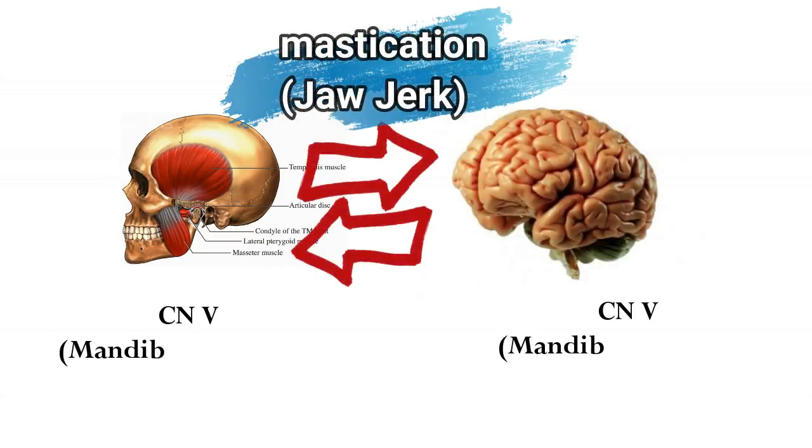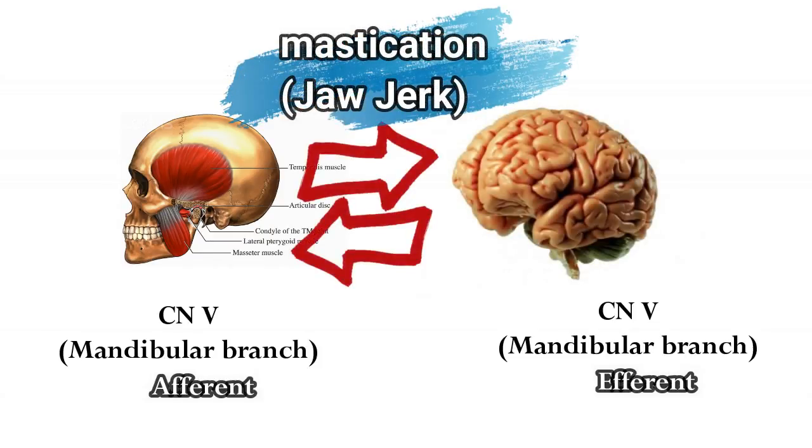Now for mastication reflexes, it's very simple. Cranial nerve number five, the mandibular branch, is both the afferent and the efferent itself.